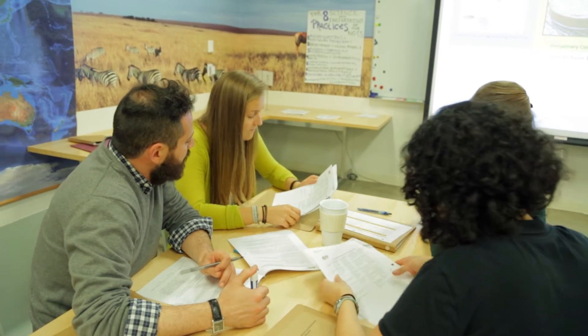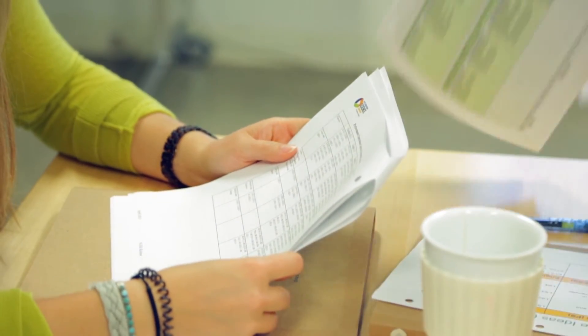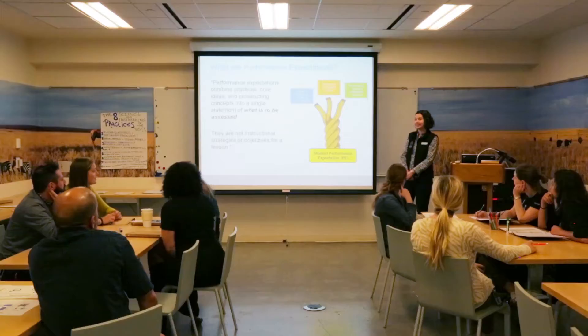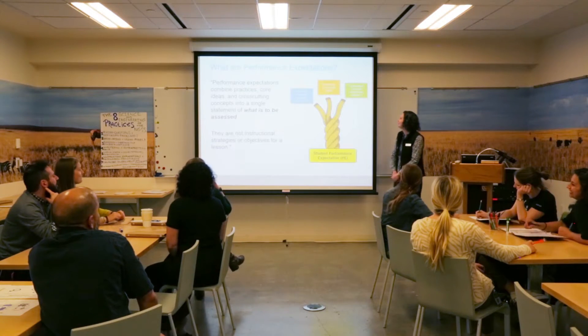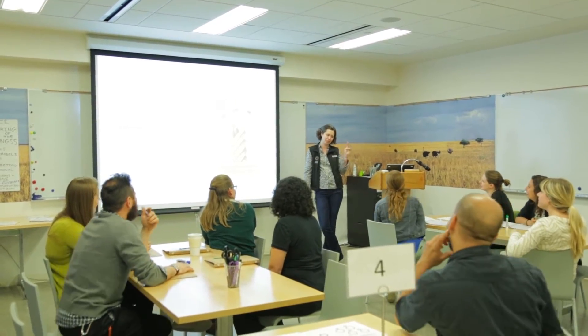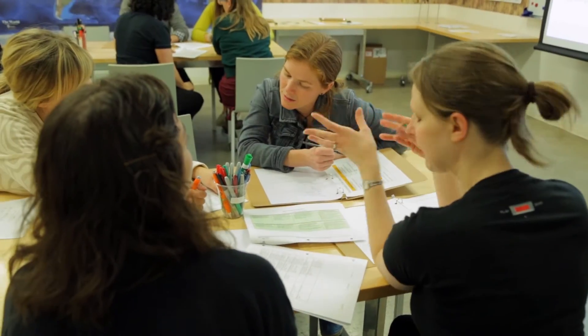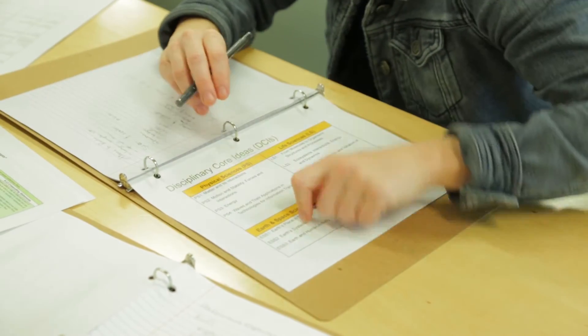The goal of this culminating activity is not for participants to read every single performance expectation, or PE, for their grade level. Rather, the goal is for participants to see how the three dimensions come together to create the PEs and to understand that the PEs are statements of what students should be able to do at the end of instruction. We recommend doing this activity only after your participants have spent time learning about each dimension of the NGSS.